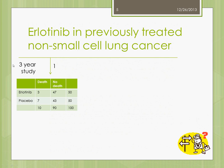In a hypothetical three-year study of Erlotinib — and these numbers are made up purely to explain the concept, not related to the NEJM study — let's say the numbers at the end of the first year were as shown in this table. Relative risk is the ratio of the event rate in the treatment group to that in the placebo group. In this case it's 3 over 7, which is 0.42.